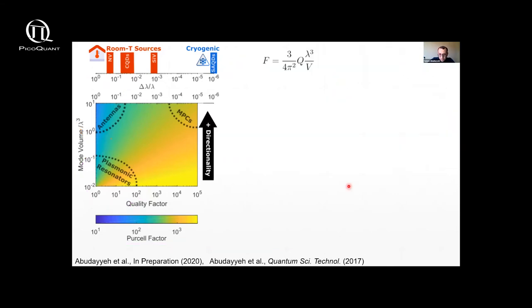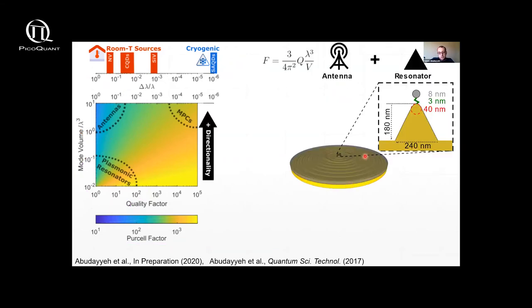So what is our solution? Our solution is basically very simple. Just take two structures, one from here and one from here, and combine them together in a single structure. So you have this bullseye antenna I'll talk about more in a while. And in the center, which belongs to this region, we place this nanocone antenna, a nanocone resonator, which belongs to this region here. So the nanocone induces a high Purcell factor, the antenna gives you high directionality.